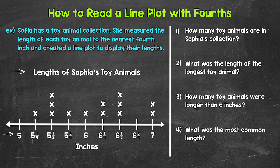Then we have the number line. For this example, the number line starts at five and goes up to seven. The number line here counts up by fourths — so we have five, five and one fourth, five and a half, five and three fourths, six, and so on up to seven. And underneath the number line we have inches, our unit of measure. That tells us the numbers represent inches. Each X represents a toy animal — for example, at seven inches we have two X's, meaning two toy animals measured seven inches.